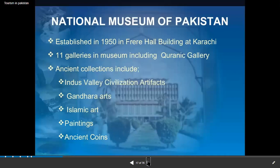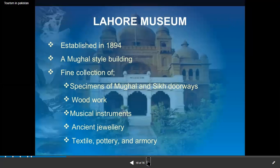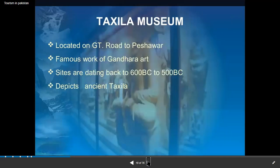The National Museum's ancient collection includes Indus Valley civilization artifacts, Gandhara arts, Slavic arts, paintings, and ancient coins. The Lahore Museum features Mughal style buildings, ancient jewelry, textile, pottery, woodwork, Mughal art, and Sikh storeways — very beautiful places to visit, especially attractive to foreign tourists. Taxila Museum is famous for its Gandhara art.